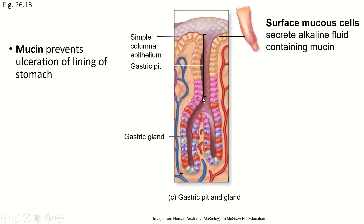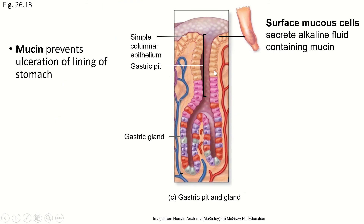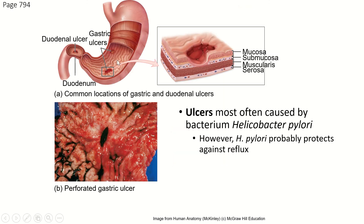There are two kinds of mucus-making cells at the top of these gastric pits. The first are the surface mucus cells, closer to the surface — they make an alkaline fluid with a lot of mucus in it. Those help to protect the tissues against the acid and also against things like bacteria that create ulcers.